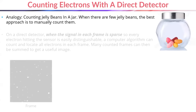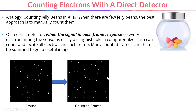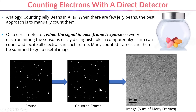Similarly, on a direct detector, if the signal is relatively sparse so that you can see distinct puddles of charge where each individual electron has hit the sensor, the best strategy is to use a computer algorithm to locate and count all of the electrons on every frame. This is how counting algorithms typically work on direct detectors — an algorithm is applied to each blob of charge on the sensor, assigning it a count of one electron and a location. You can then sum a very large number of these sparse frames together until you have enough signal to form a usable image.